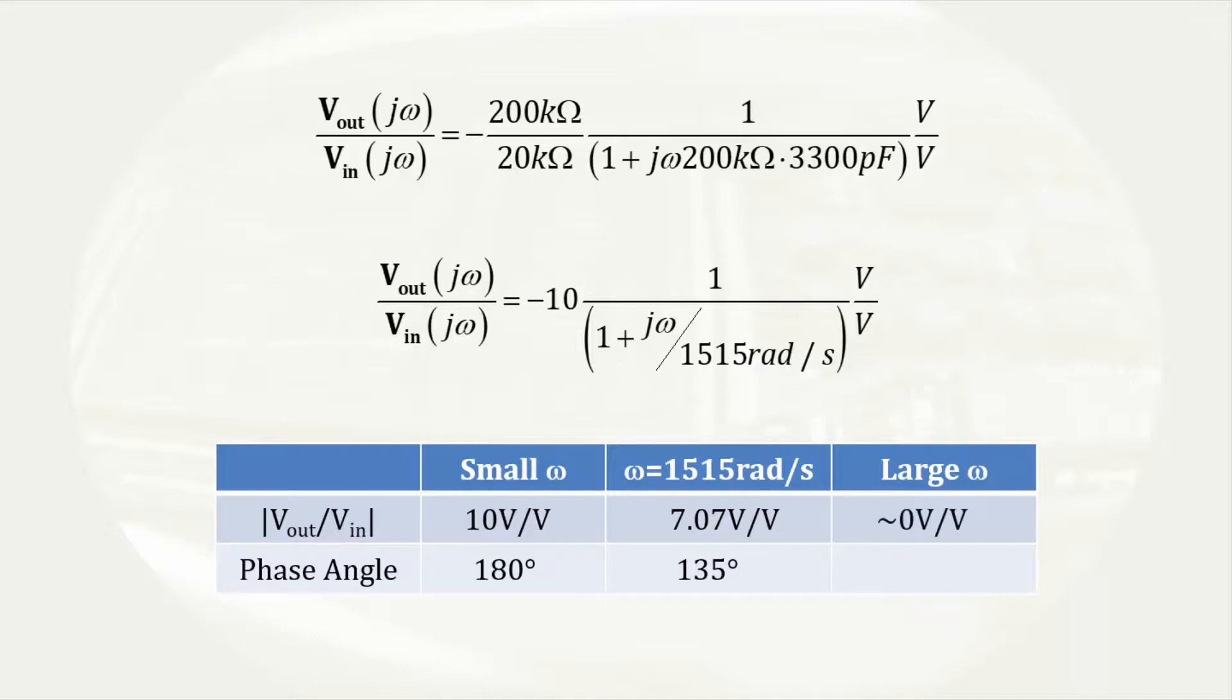At high frequencies, the denominator is dominated by the imaginary term. The magnitude of the denominator makes the gain limit to 0 volts per volt. Since the denominator is essentially imaginary for large values of omega, the resulting 90 degree phase shift will subtract from the original 180 degrees giving us a 90 degree phase shift.